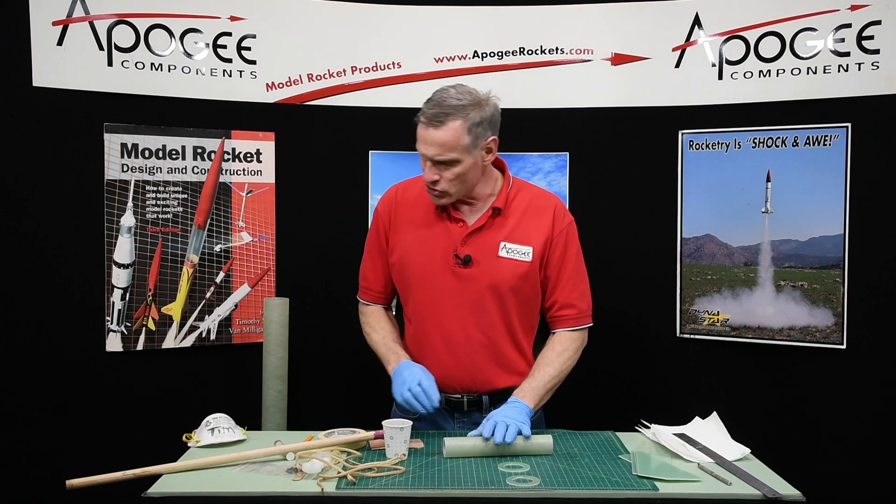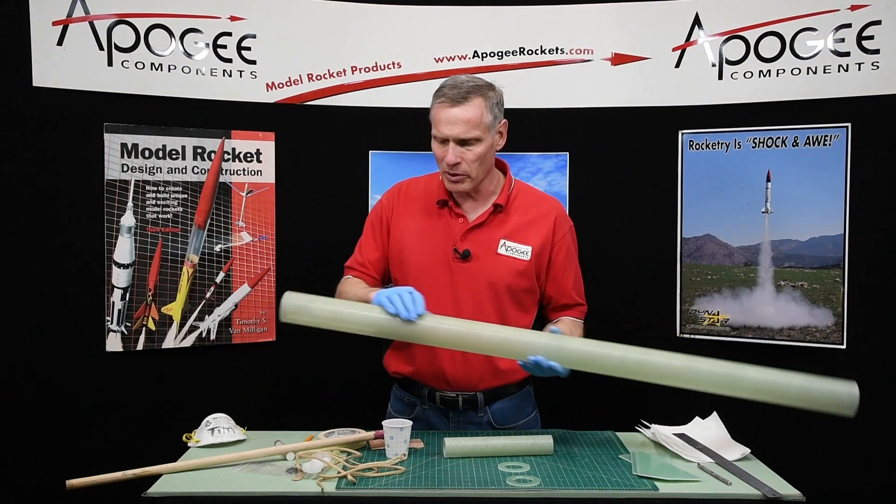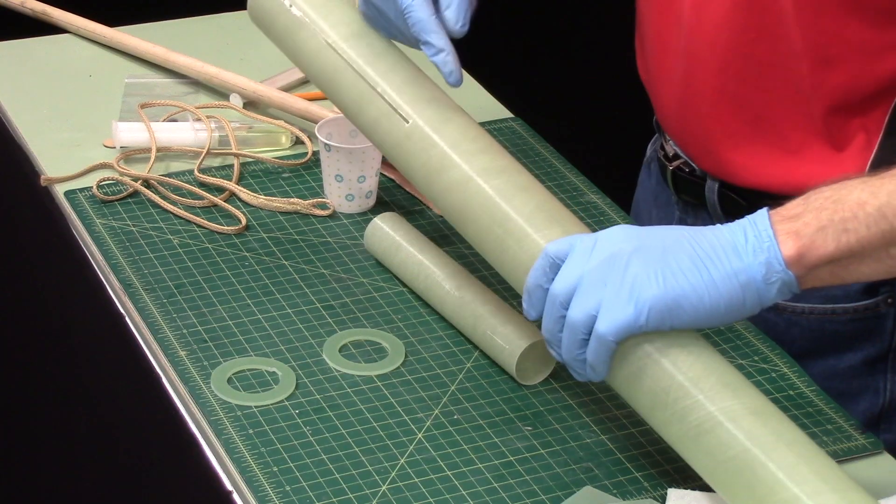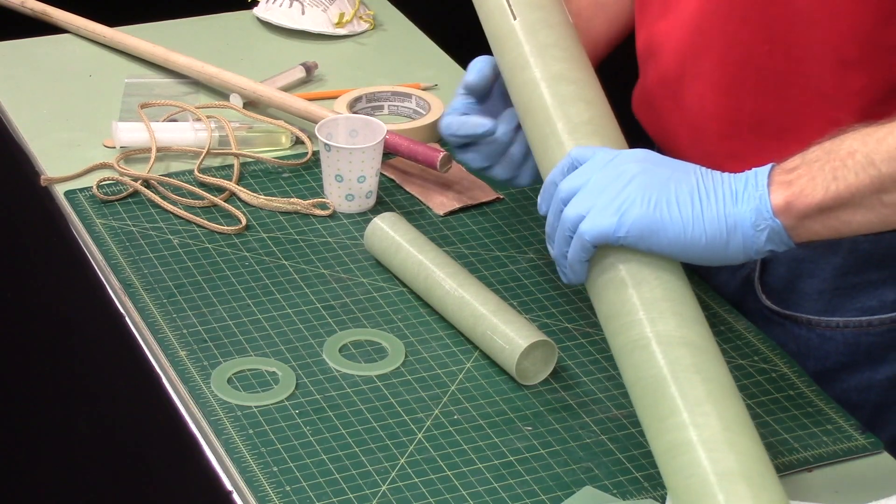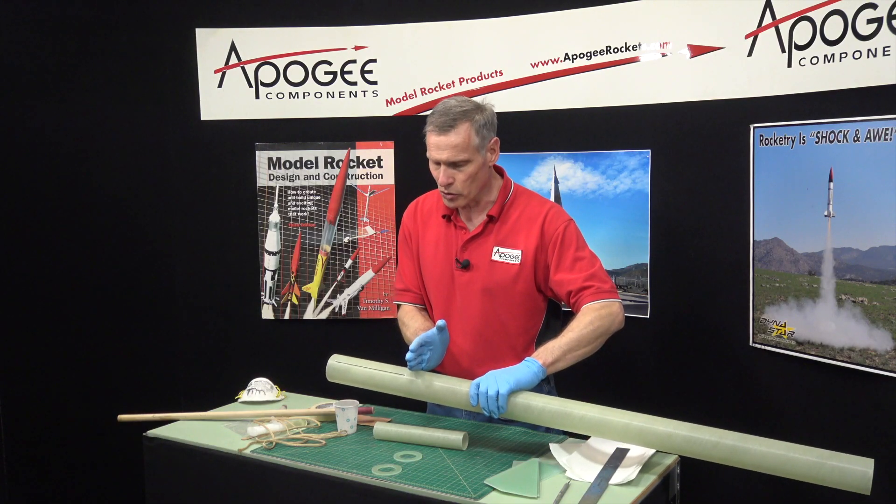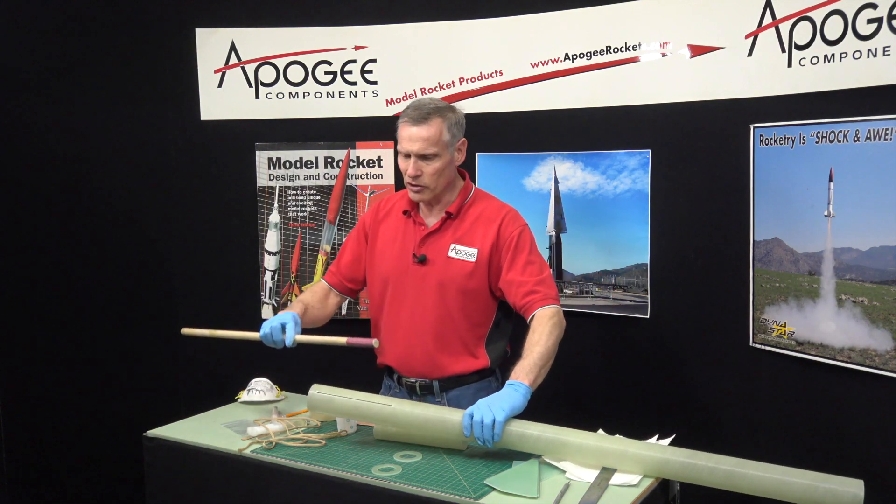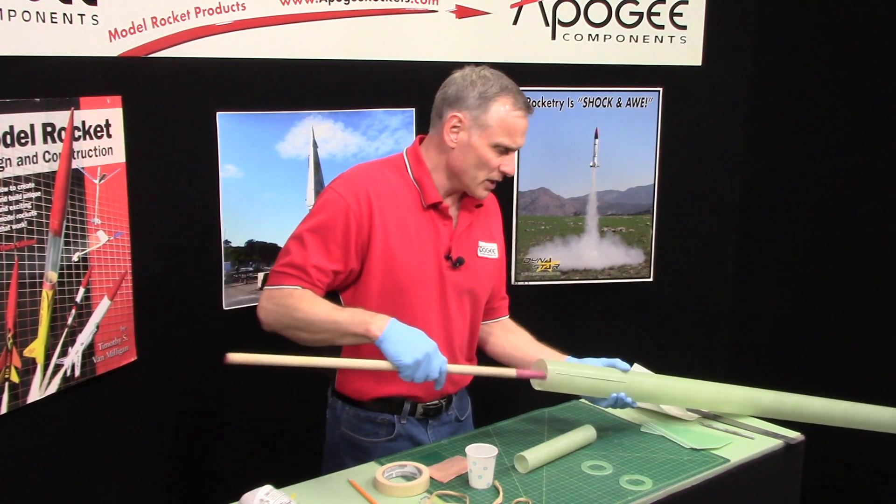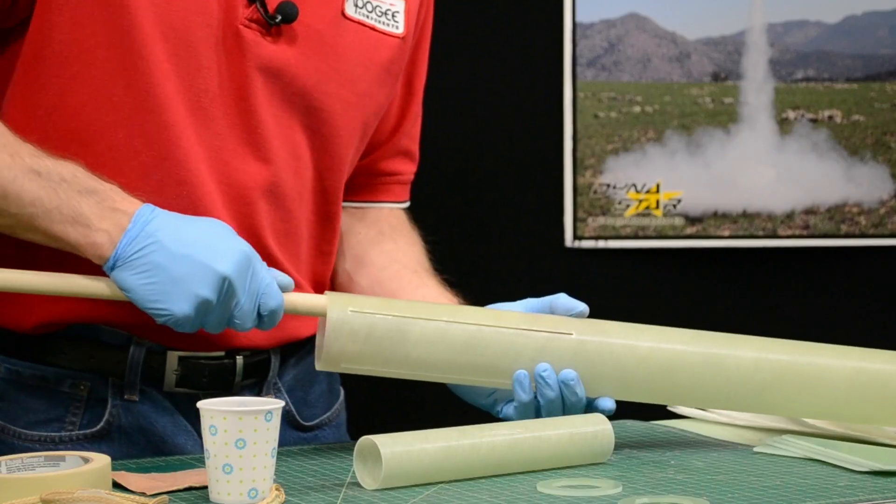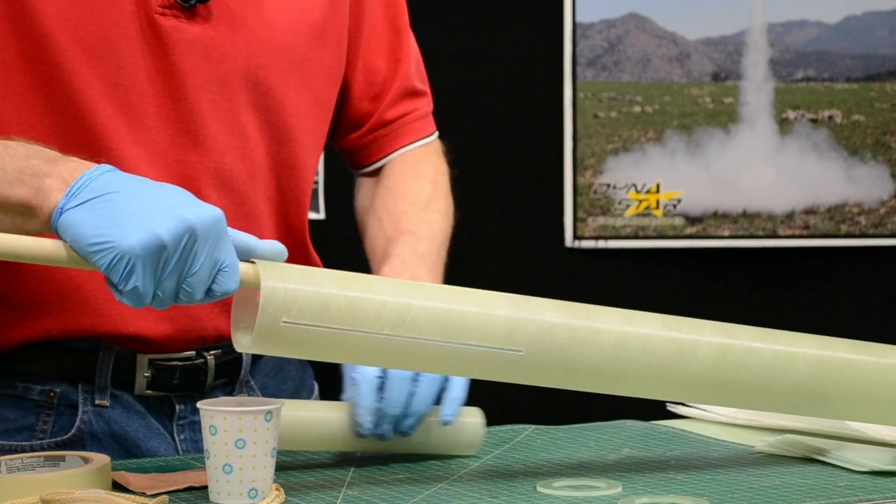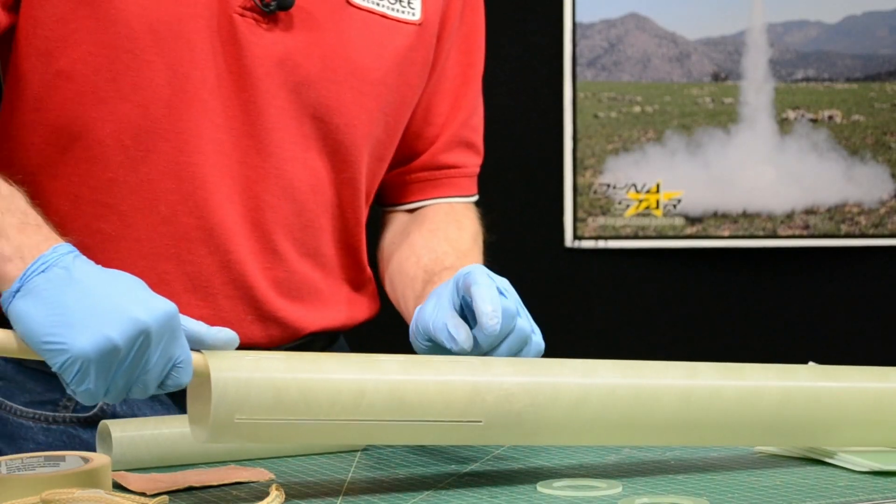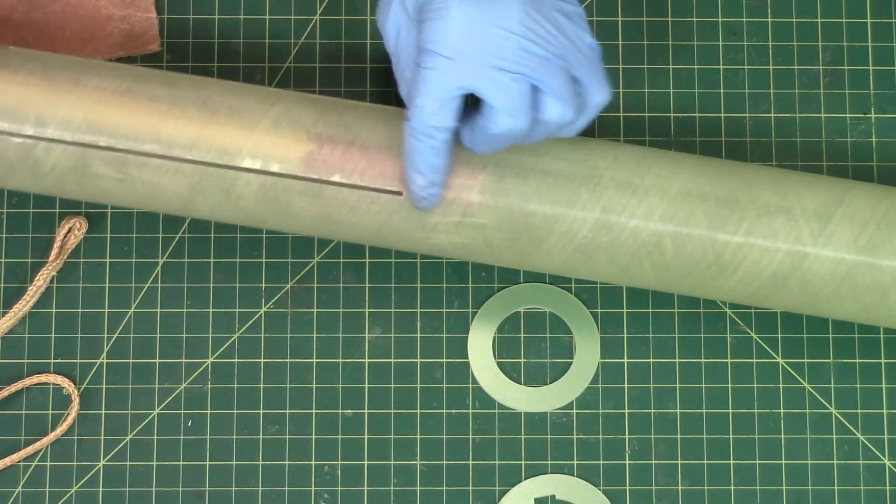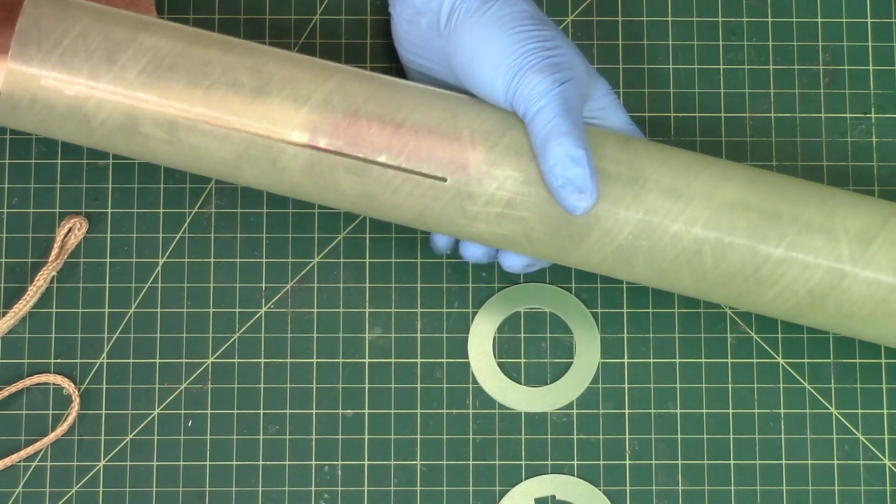So we need to scuff up this tube and scuff up the inside of the body tube. You need to create a ring up here where the front centering goes. To do that, you're going to take a wood dowel and wrap it with sandpaper, and then you can get on the inside and scuff it up. The nice thing about these fiberglass tubes is they're semi-translucent so you can see where you're scuffing.